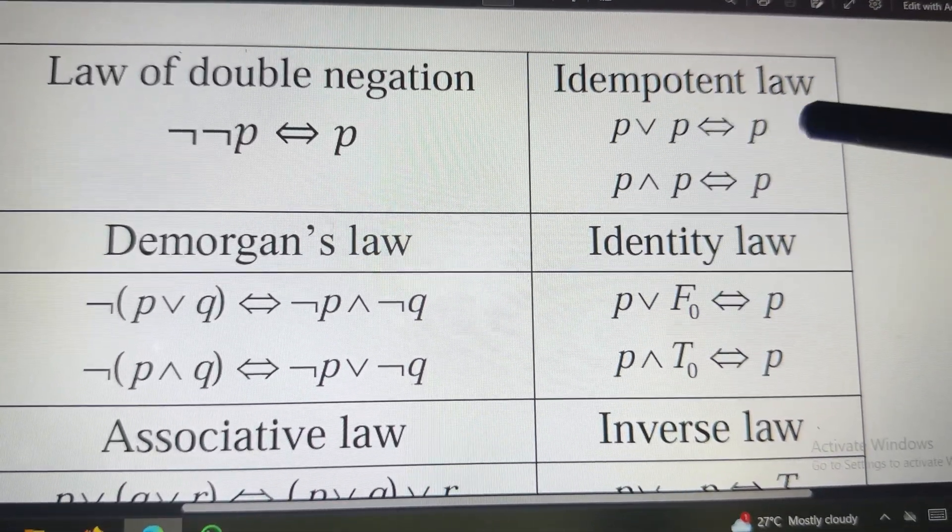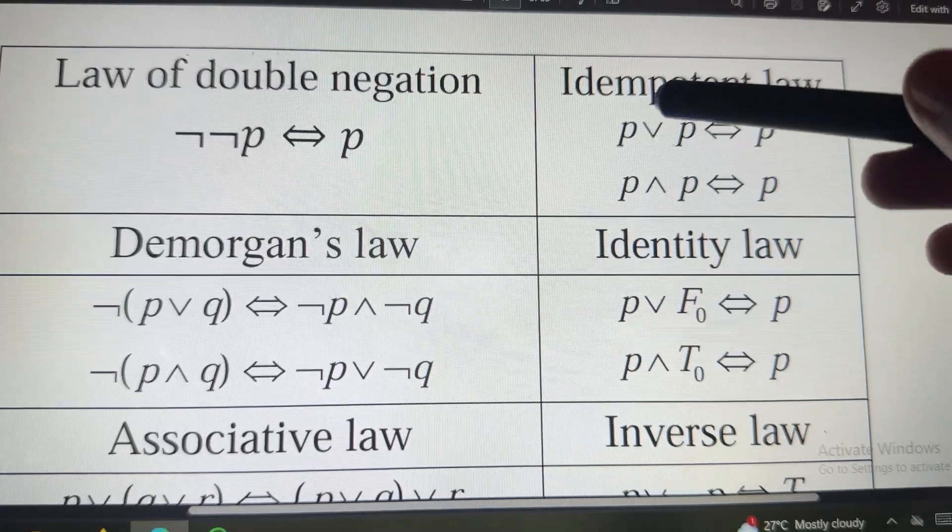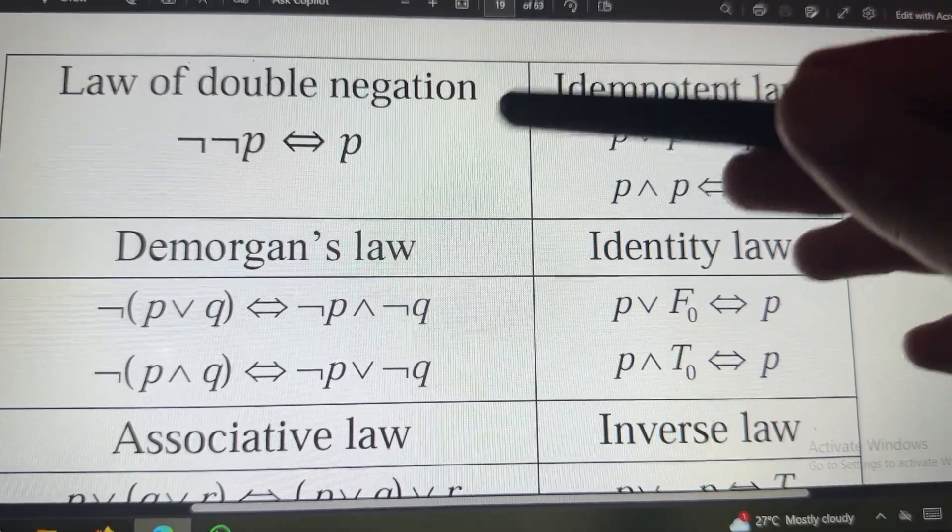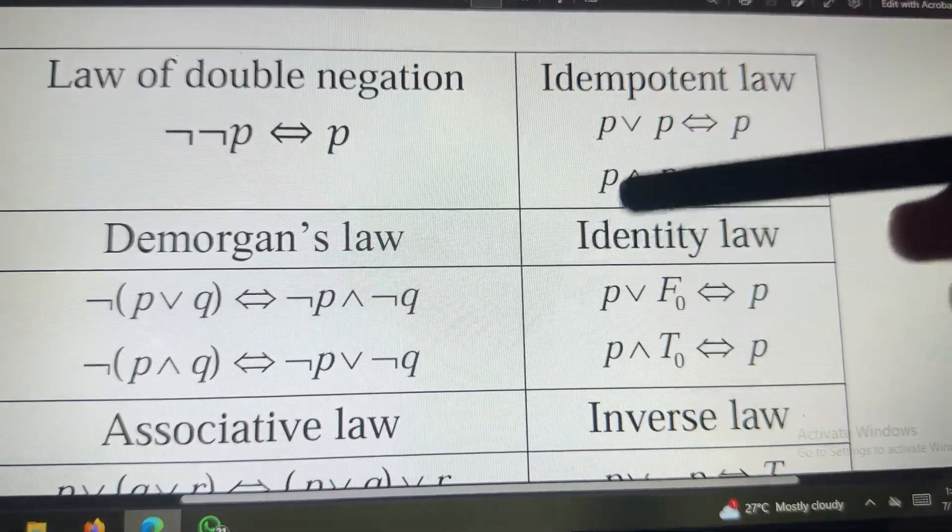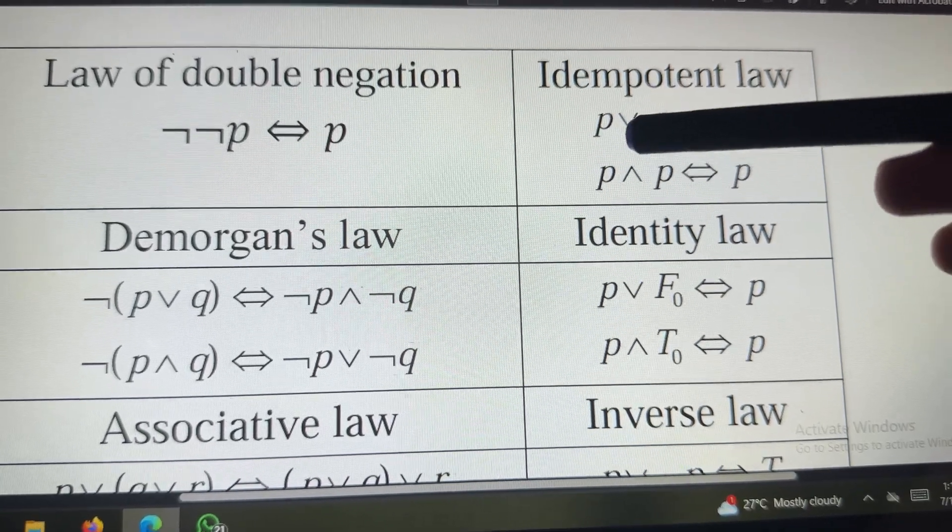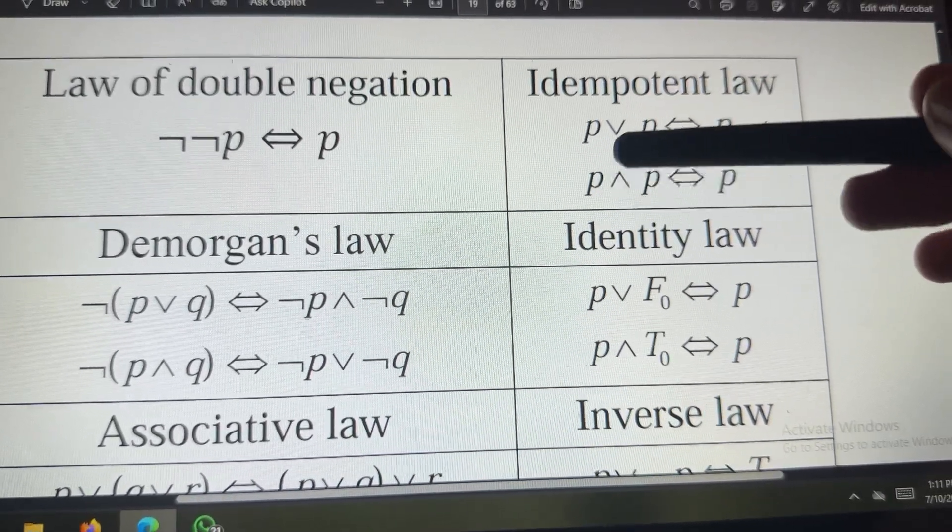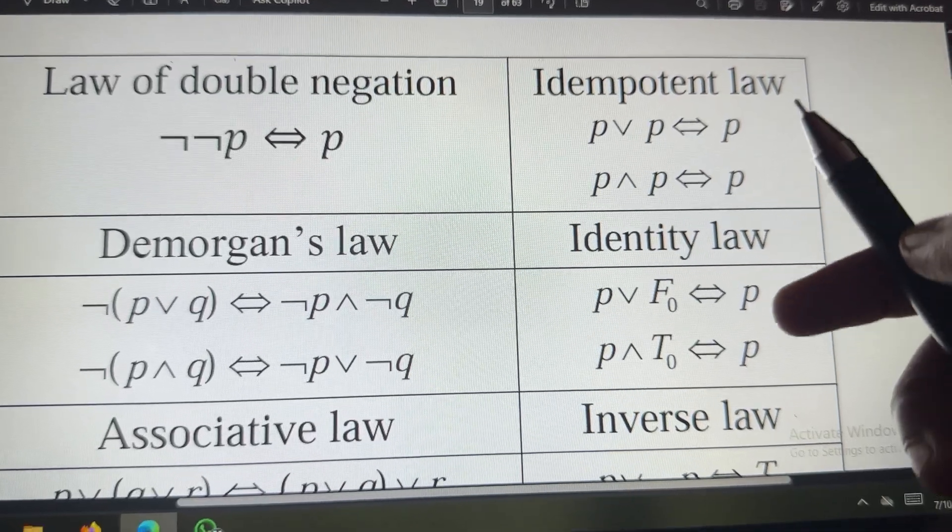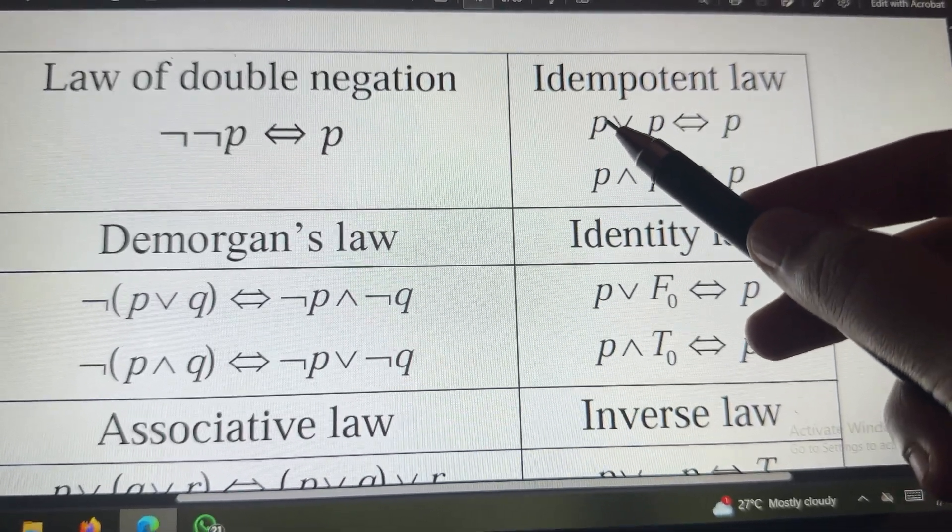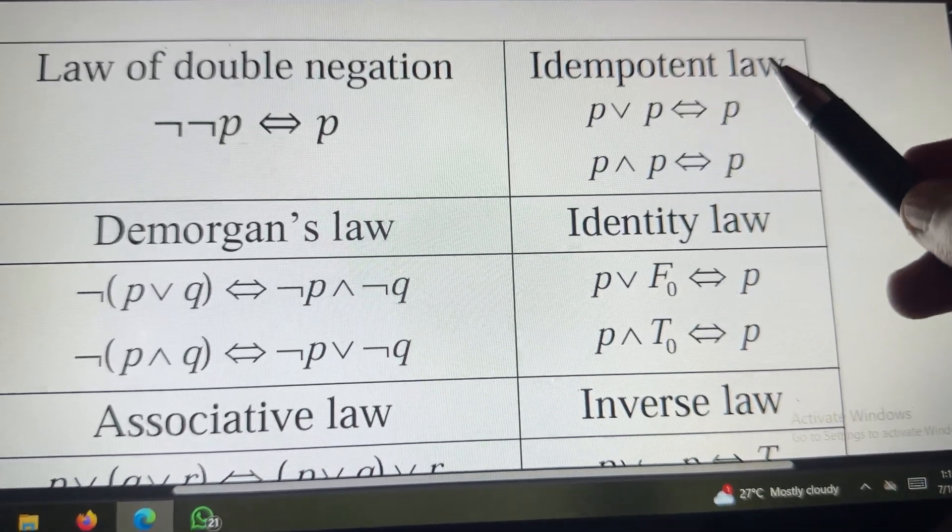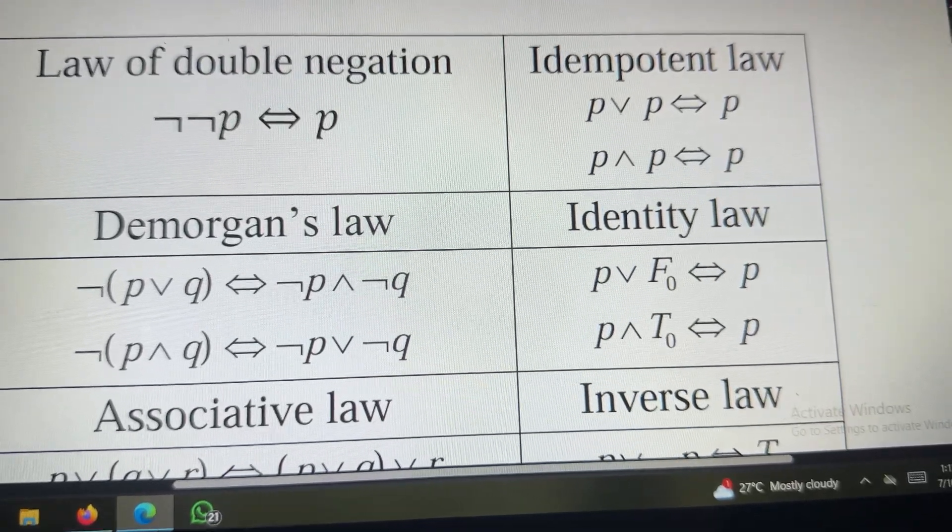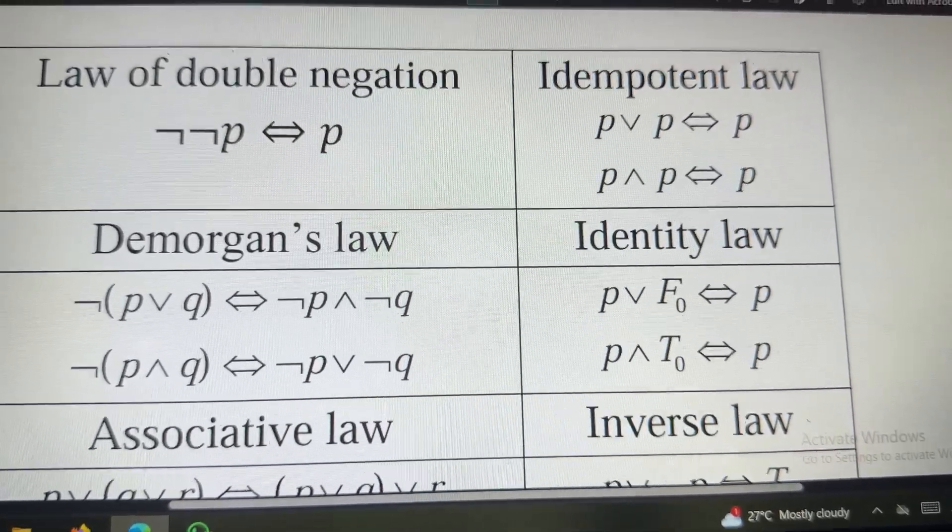First, we have idempotent law. In idempotent law, remember the letter P. I hope you know, like everywhere, you either use the symbol of OR or AND. Now, in idempotent law, P or P will be P. P and P will also be P. Like that you have to remember.